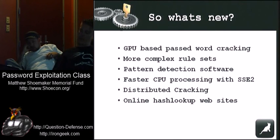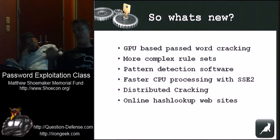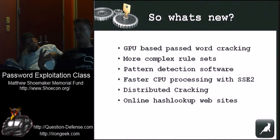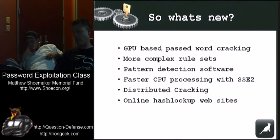Some of the new stuff in password cracking is GPU-based password cracking, which utilizes GPU cores to crack passwords. The reason it works is because password cracking benefits from more threads — one core gives you one thread, four cores give you four threads, SSE2 code gives you eight threads. For example, a NVIDIA GTX 295, which has 160 cores, gives you 160 threads, and we're going to attempt to show that off.